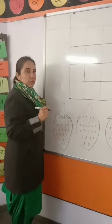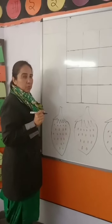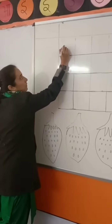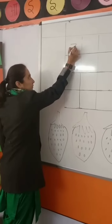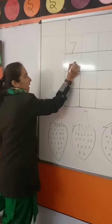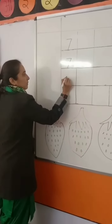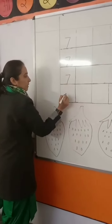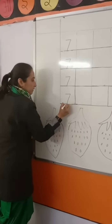So now let's learn how to write number seven. First of all, make a sleeping line, then make a slanting line. Sleeping line, slanting line. Sleeping line, slanting line. Sleeping line, slanting line.